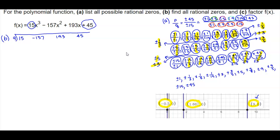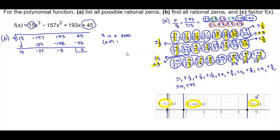We bring down the 15. Then 9 times 15 is 135. Negative 157 plus 135 gives us negative 22. Negative 22 times 9 gives us negative 198. 193 minus 198 is negative 5. And 9 times negative 5 is negative 45, which gives us a remainder of zero. So we know that 9 is a zero, and that tells us that x minus 9 is a factor.